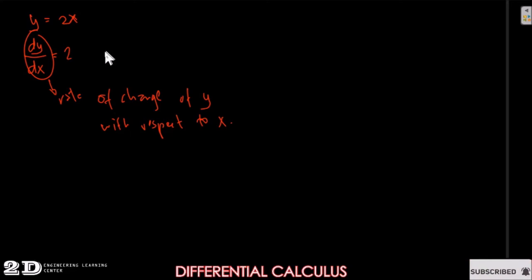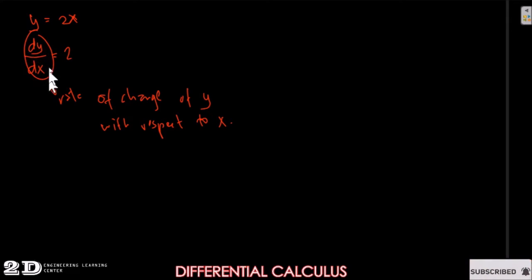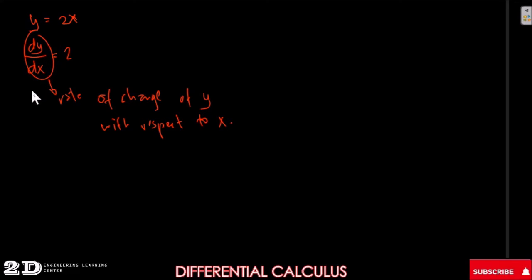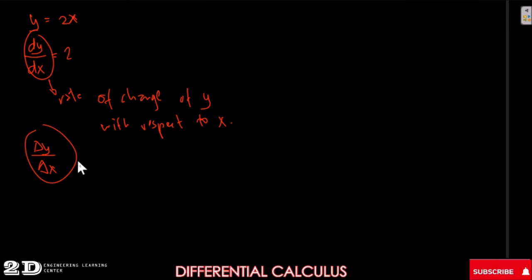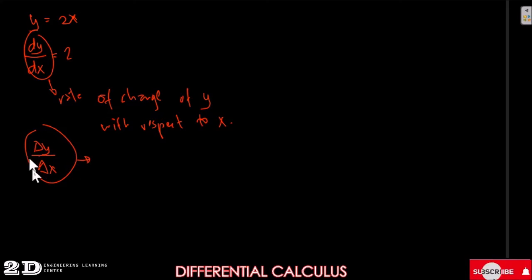So dy/dx is now the rate of change of y with respect to x. For example, if x is changing to certain values, we could calculate the change in the value of y. That's why the very first notation for this is delta y over delta x, where delta means change.